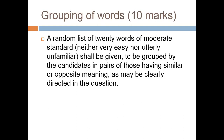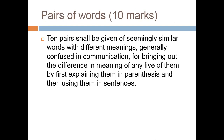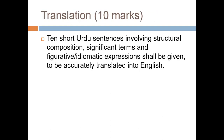Then comes the grouping of words. The majority of this portion is objective and carries 20 marks. For 'Pair of Words,' ten pairs of seemingly similar words with different meanings — generally confused in communication — will be given. You have to bring out the difference in meaning for any five of them by first explaining them in parentheses and then using them in sentences. You have to explain their meaning and use them in sentences.